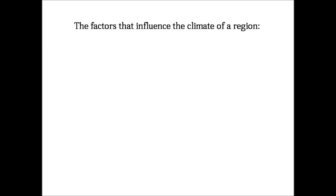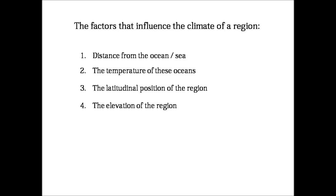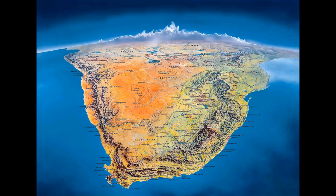Let's have a look at the factors that influence the climate of a region — what makes a specific area have the type of climate that it does. These are the distance from the ocean, the temperature of these oceans, the latitudinal position of the region, and its elevation. Now let's have a look at these factors in relation to South Africa.